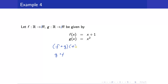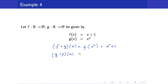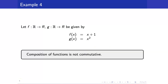The image of x under f circle g is f of g of x, which is x squared plus 1. And g circle f of x is equal to g of f of x, which is x plus 1, so therefore that is x plus 1, squared. Take note that we have just seen that the composition of functions is not commutative.